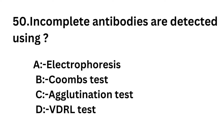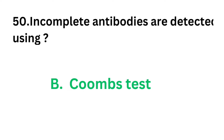Question number 50: Incomplete antibodies are detected using — option A: Electrophoresis, option B: Coombs test, option C: Agglutination test, option D: VDRL test. Incomplete antibodies are detected using Coombs test. The correct answer is option B, Coombs test.